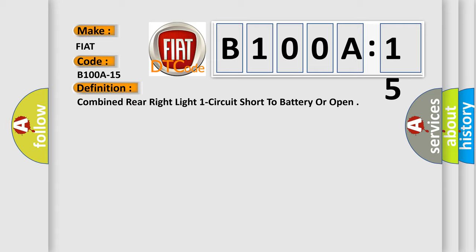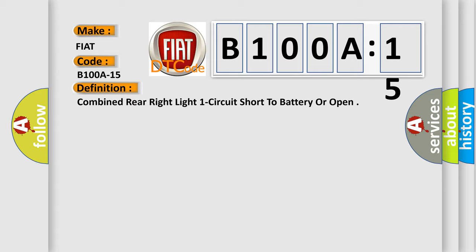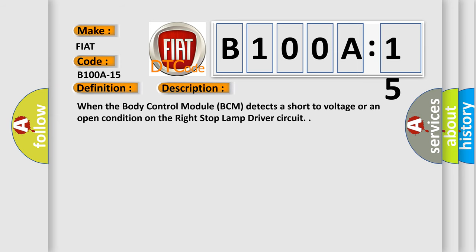And now this is a short description of this DTC code. When the body control module BCM detects a short to voltage or an open condition on the right stop lamp driver circuit.